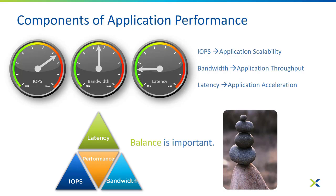I like to explain it by looking at the components of application performance. There are three main components: IOPS affecting application scalability, bandwidth affecting application throughput, and latency which ultimately affects application acceleration. Obviously a balance of all three is important, but those are the three main components when it comes to application performance.